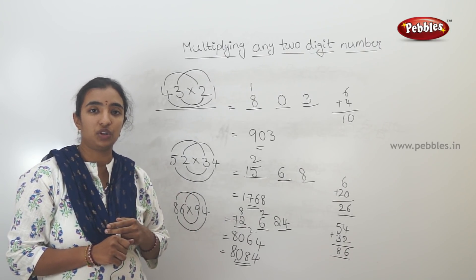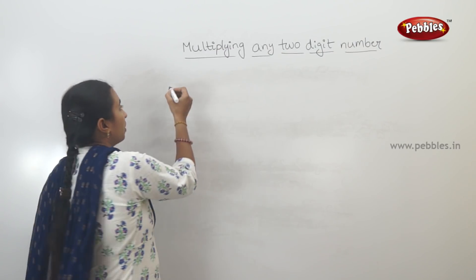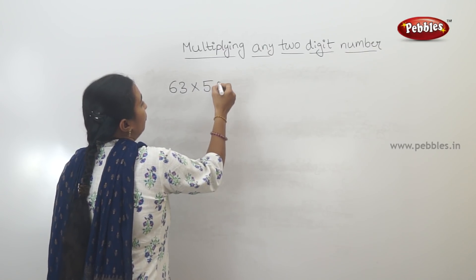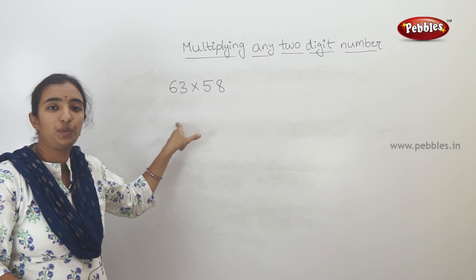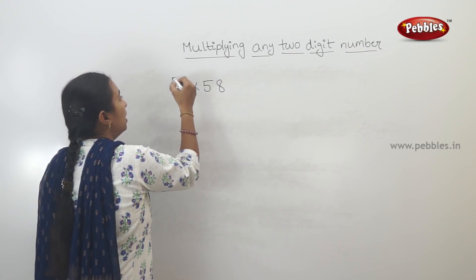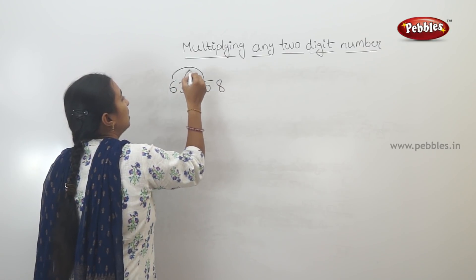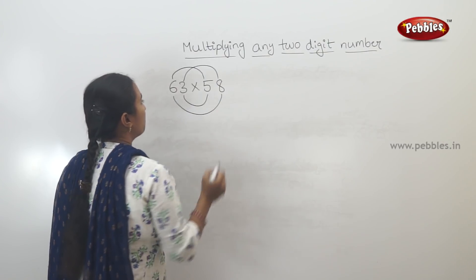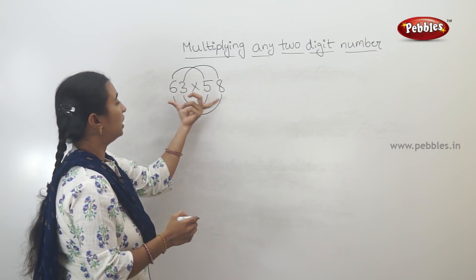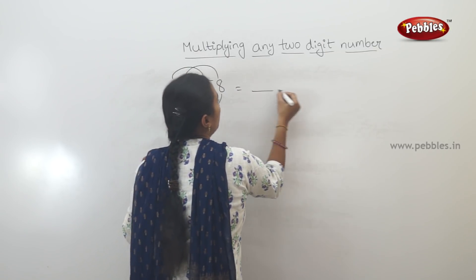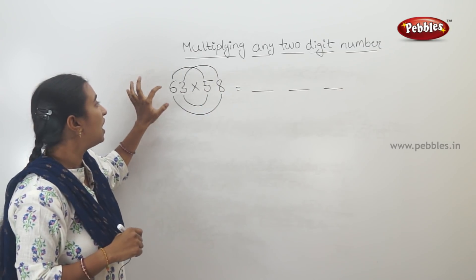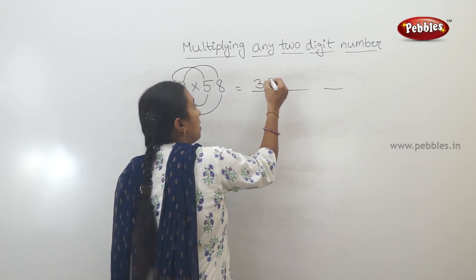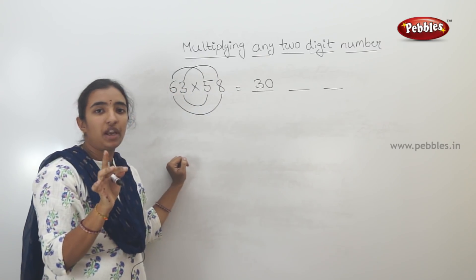Let's look at another example: 63 into 58. We can add what we do first. We can add 3 to 5. We don't have a two-digit number problem. In R5, it's 3.